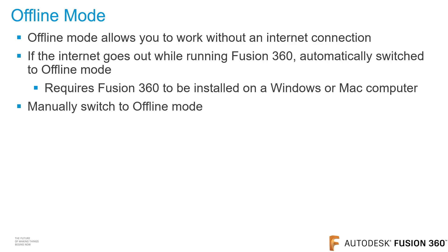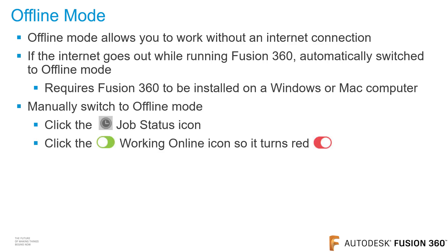You can also manually switch to offline mode. To do so, click on the job status icon on the top right corner of the Fusion 360 screen, then click on the slider to change to offline mode.